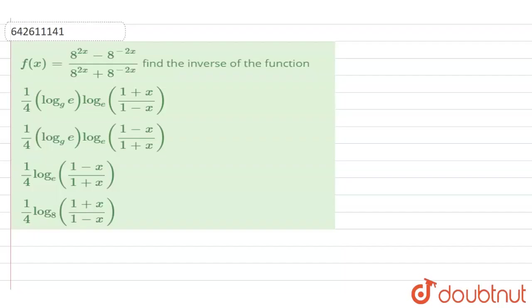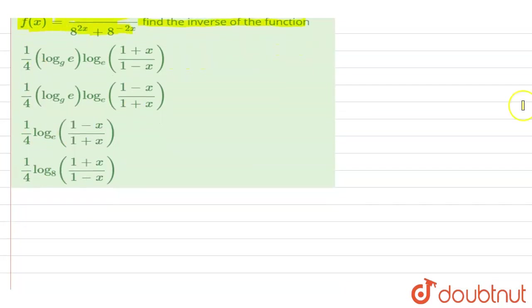Hello everyone, so let's start with the question. The question says that f(x) is equal to 8 to the power 2x minus 8 to the power minus 2x upon 8 to the power 2x plus 8 to the power minus 2x. Find the inverse of the function and these are the four options given to us. So let us see which option is correct.